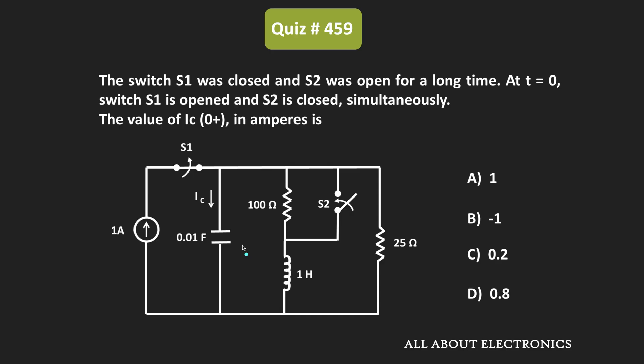Hey friends, welcome to the YouTube channel all about electronics. In this question, we have been given a circuit where since a long time, switch S1 is in the closed condition while S2 is in the open condition. At time t equals 0, S1 is opened and S2 is closed simultaneously. At time t equals 0+, we have been asked to find the value of the capacitor current IC.